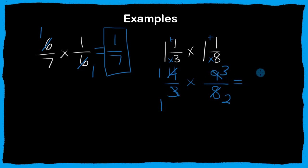Okay, so that gives us one times three is three, and one times two is two. Three-halves, or we could change that into a mixed fraction and say our answer is one-and-a-half.